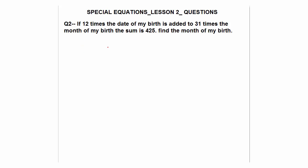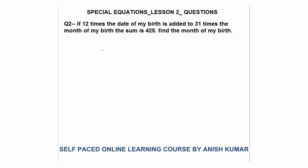Question number 2 says: 12 times the date of my birth is added to 31 times the month of my birth, and the sum is 425. So 12D plus 31M equals 425. Remember that M will always lie between 1 and 12, and D will lie between 1 and 30 or 31. Now pause the video, try to solve yourself, then look at the way I have solved.